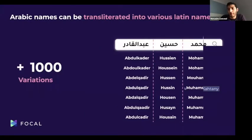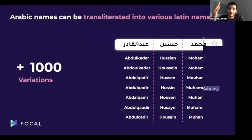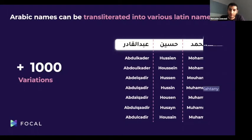When it comes to Arabic, if you take an Arabic name — for example, Muhammad Hussein Al-Qadr — written in Arabic, you can transliterate it into many possible variations. If each name has 10 variations and you have a three-part name, you're dealing with a thousand possible combinations, which is a very sophisticated problem to solve.